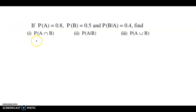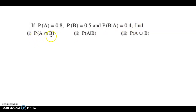Hello and welcome back. We now discuss an example from the topic probability. The question is: if probability of event A is 0.8, probability of B is 0.5, and probability of B given A is 0.4, find probability of A intersection B, probability of A given B, and probability of A union B.